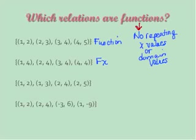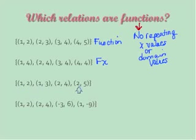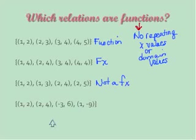Function abbreviated is fx, so I'm going to use fx. This third one, we have a 1, a 1, a 2, and a 2 — we have two domain values being repeated, the 1s and the 2s — so that means it's not a function. And the last one, we have a 1, a 2, a negative 3, and a 1, so we have a repeat of 1s, which makes it not a function.